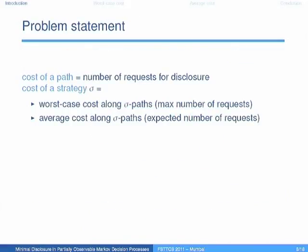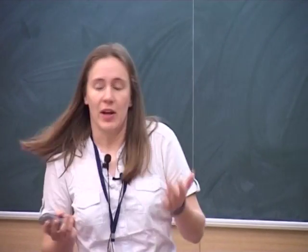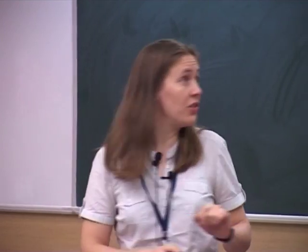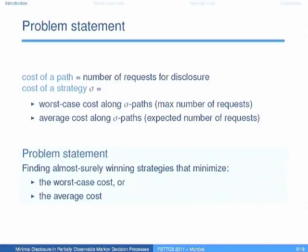There are two natural ways of specifying cheapness. If you take a single path, the cost is the number of requests along that path. Given a strategy for the controller, there are at least two natural options: the first is to say the cost of the strategy is the worst case cost encountered along paths following this strategy; the second option is to consider the average cost — the expected number of requests using this strategy. We will try to find almost surely winning strategies that either optimize the worst case cost or optimize the average cost.